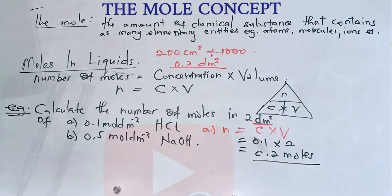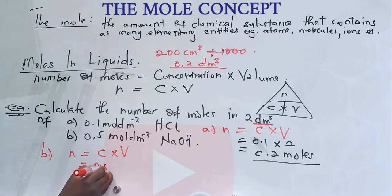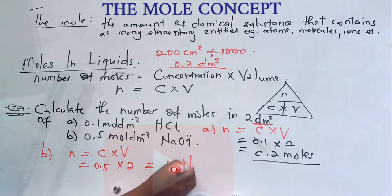And B) 0.5 mole per cubic decimeter of sodium hydroxide. So what we need to do here, number of moles is equal to concentration times volume, where our concentration is 0.5, multiplied by our volume 2. This gives us one mole.